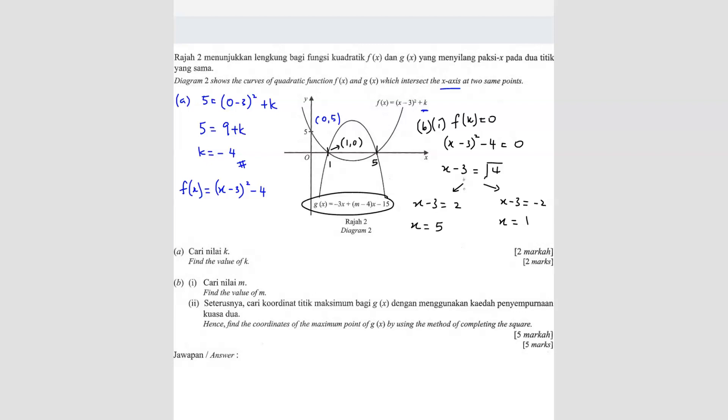So we're going to use this coordinate here which is (1, 0). So substitute into your g(x) equation. So g(x) is going to be 0 equals -3(1+m) - 4(1), no need to write there, minus 15.